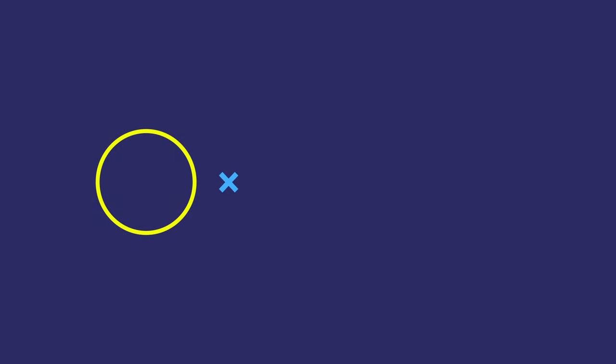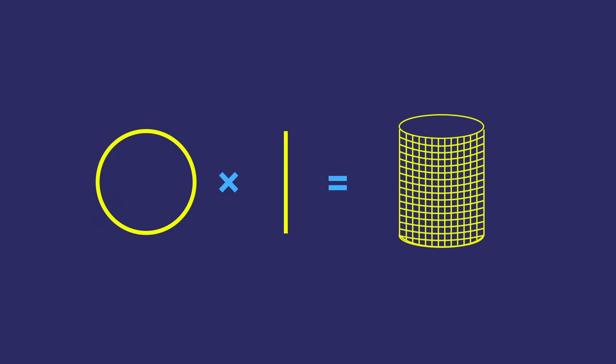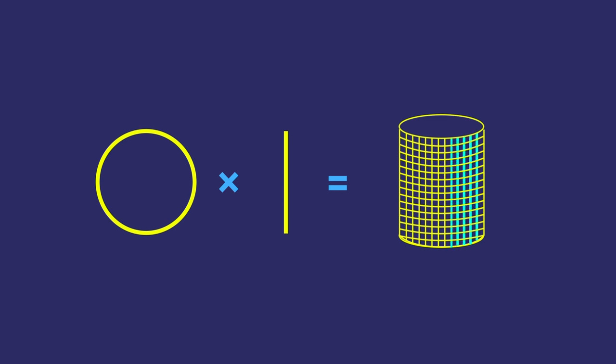A circle times a line segment is a cylinder. A cylinder can be thought of as either a line segment of circles — all these circles stacked linearly — or it can be thought of as a circle of line segments. It works both ways, which is why we can write this cylinder as a product of the two other shapes. And you'll notice that those circles are all perpendicular to the line segments.